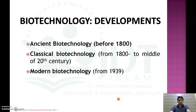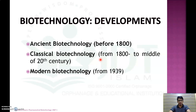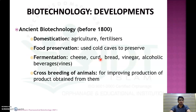Coming to the development or history of biotechnology, we can divide the development into three eras: ancient biotechnology, that is before 1800; classical biotechnology, from 1800 to the middle of the 20th century; and modern biotechnology from 1839 onwards. Now, what were the important discoveries or developments during ancient biotechnology, that is before 1800?